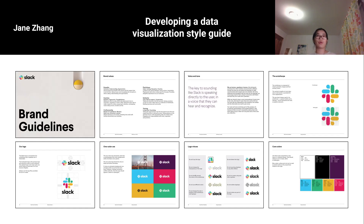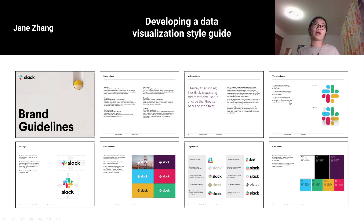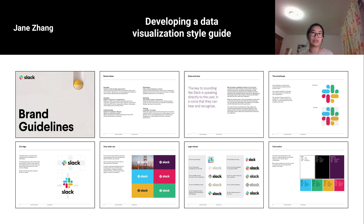This is Slack's branding guidelines. It is a PDF document, so unlike Uber which was a web interface, this is a PDF — about 30 to 40 pages. It's very straightforward guidelines, about one page per idea. For example, they have logo, color use, voice and tone, brand values. It was very simple and concise, just one document. So whatever I make would have to integrate within this and wouldn't take up a big section — probably one to two pages at most, covering how to visualize data.